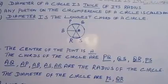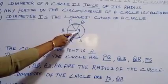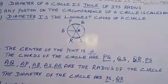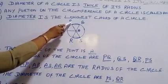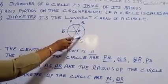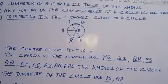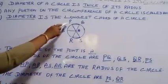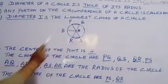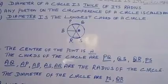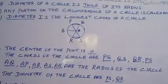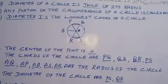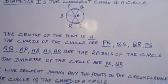Then, radius — what is radius? The radii of the circle are PA, BA, SA, and RA. The diameters of the circle are PS and QR. The diameter is the longest chord of the circle — do you know the difference between chord and diameter? The longest chord of the circle is the diameter.